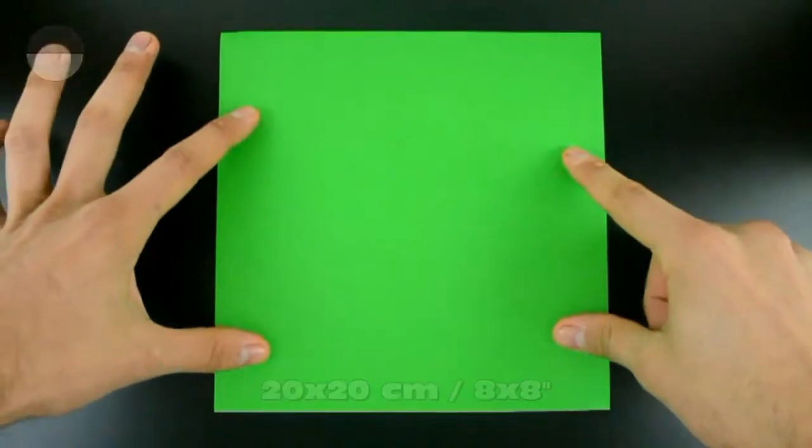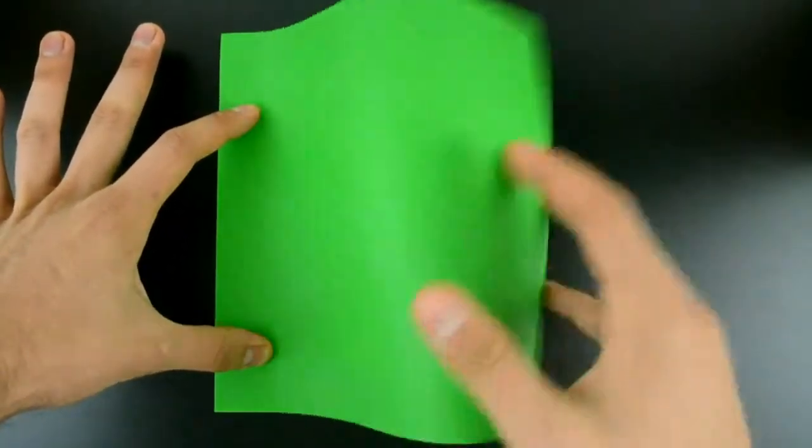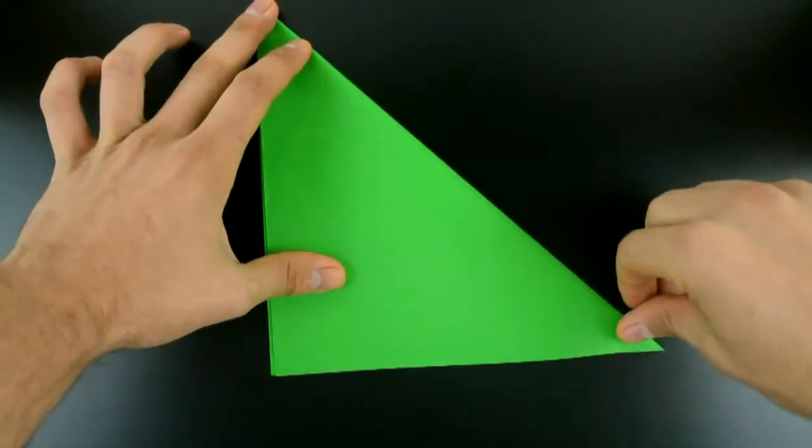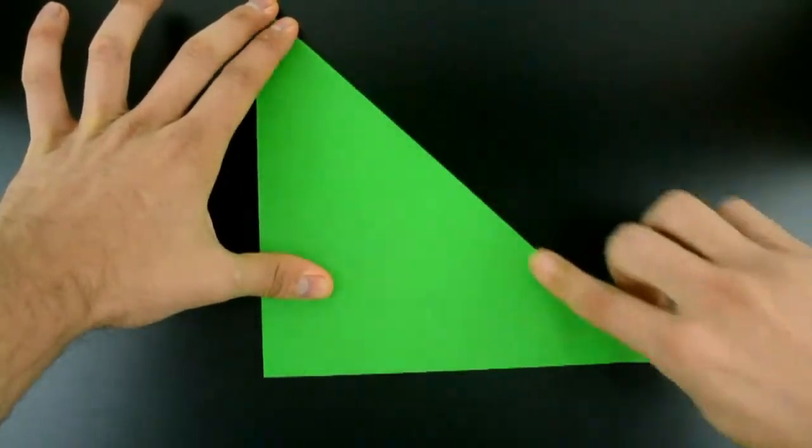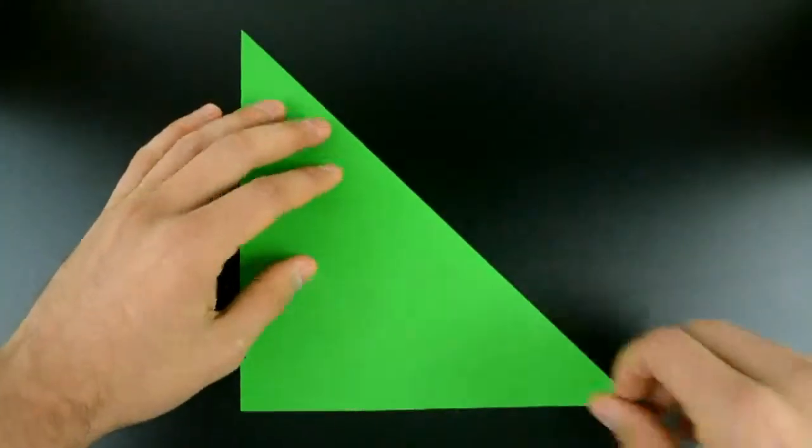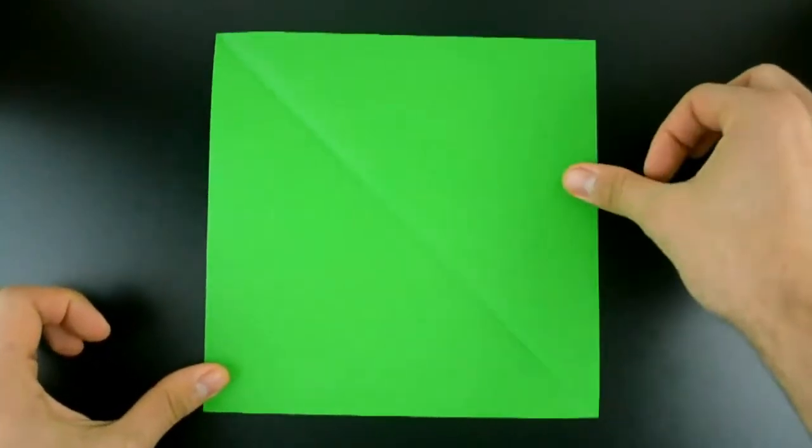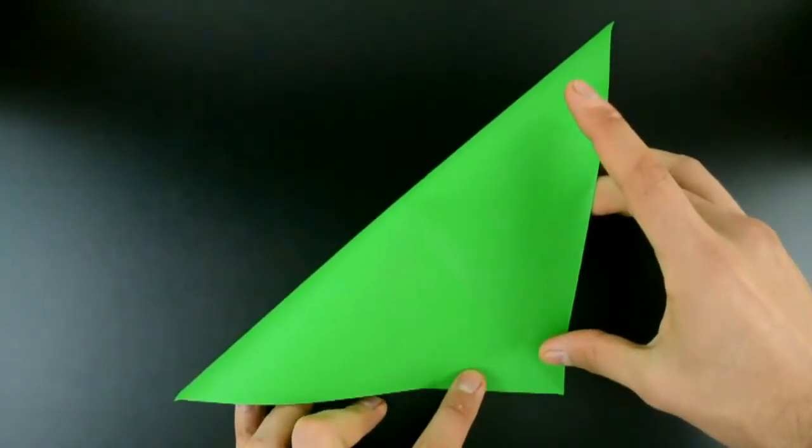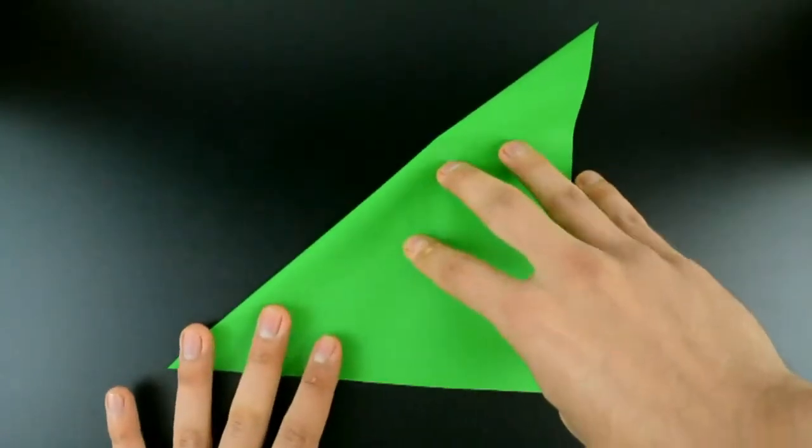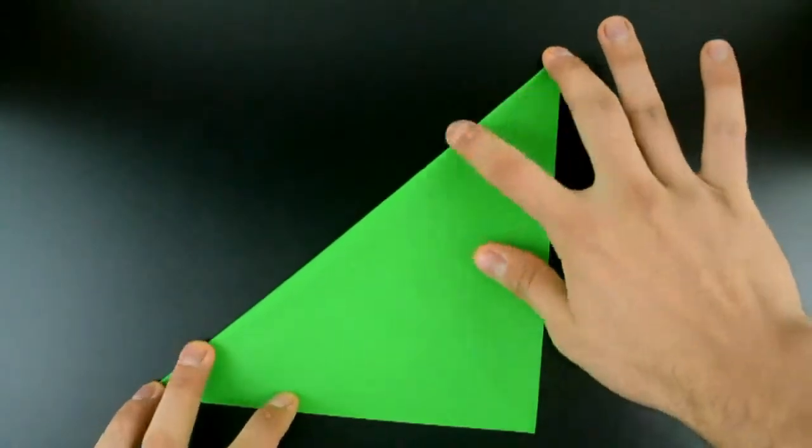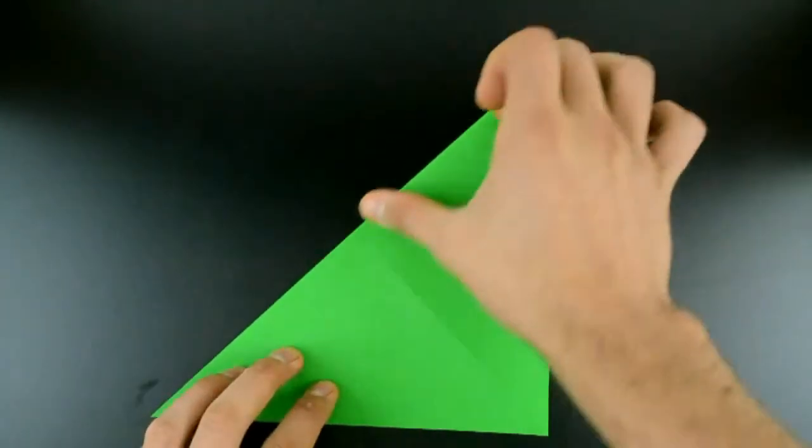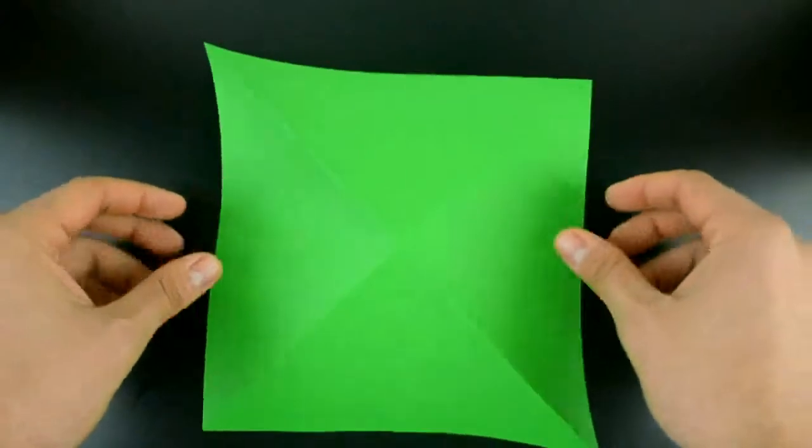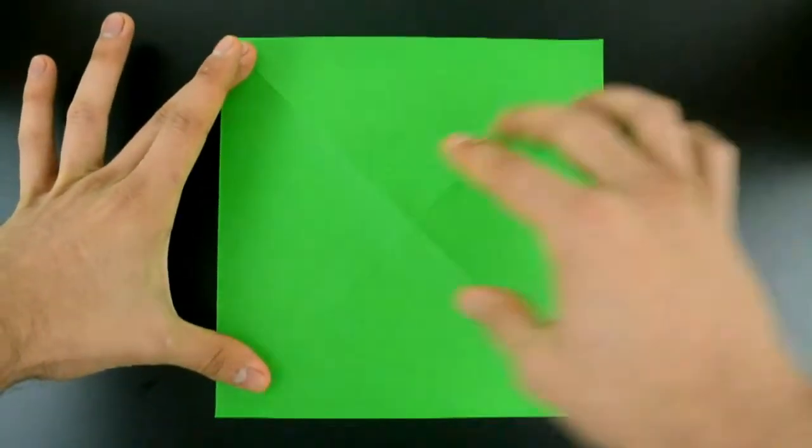The first step is to fold in half along both diagonals like a letter X. First this one, then the other. Alright, with this done, turn the paper over and fold in half horizontally and vertically.